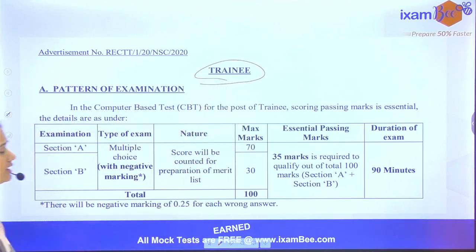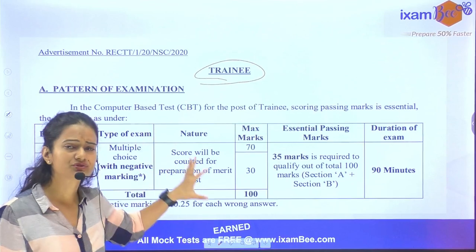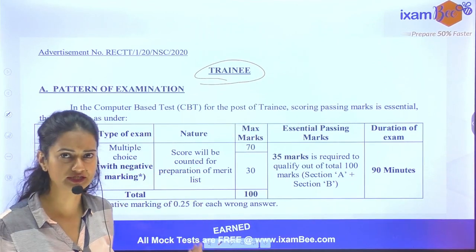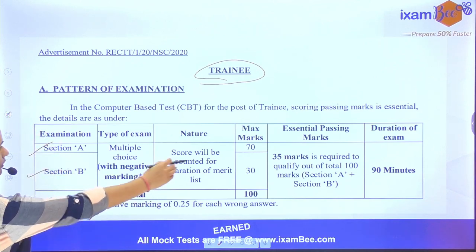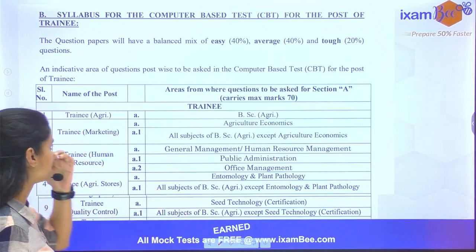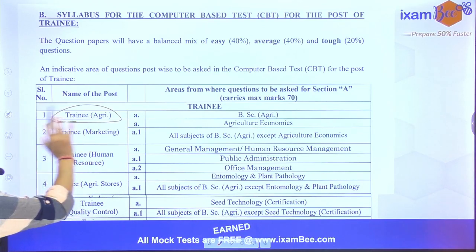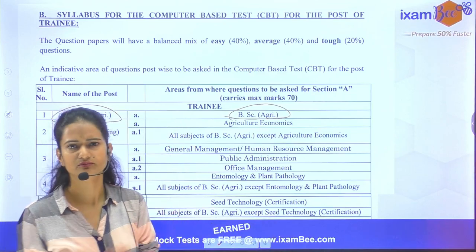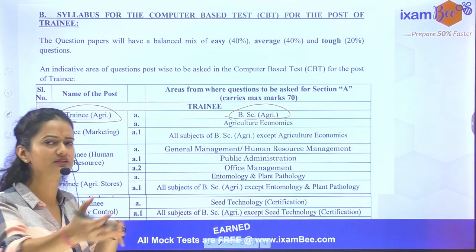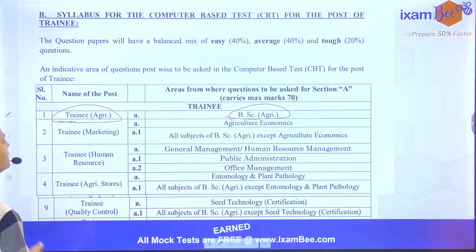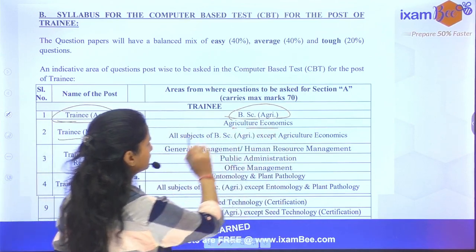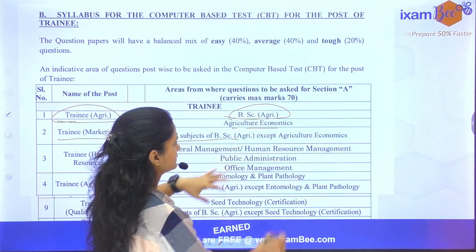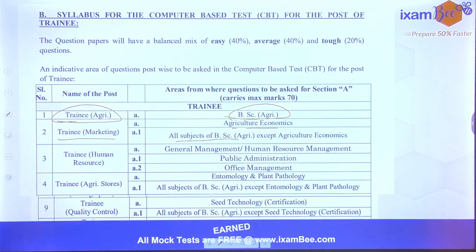For the trainee posts, the pattern is similar with two sections — Section A and Section B — but there is only a single written exam with no interview; selection is based on the exam alone. Total marks are 135 with 0.25 negative marking. For trainee agriculture, Section A covers all subjects of BSc Agriculture. For trainee marketing, Section A covers agriculture economics and all subjects of BSc Agriculture except agriculture economics.